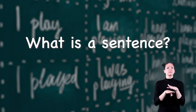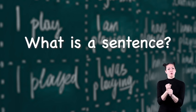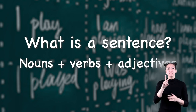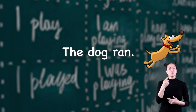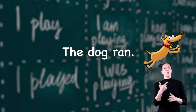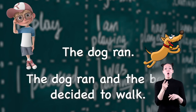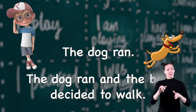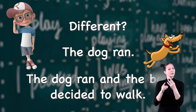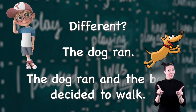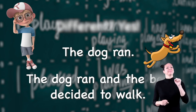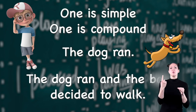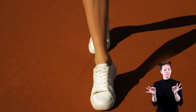But first, what is a sentence? At its most basic, a sentence is formed when you put words such as nouns, verbs, and adjectives together. 'The dog ran' — that's a sentence. 'The dog ran and the boy decided to walk' — that's also a sentence. But those two sentences are different, right? Yes — one of them is a simple sentence and one is a compound sentence.